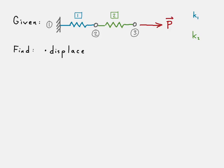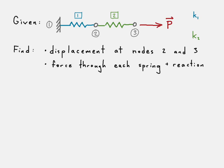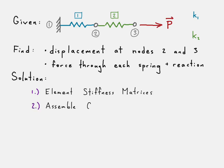What we want to do is find the displacements at nodes two and three — the only two that are not fixed. We want to figure out the force through each of the springs and the reaction force at node one. The solution process for finite element analysis is composed of the following six steps. The first is the elemental stiffness matrices — we go ahead and formulate those first.